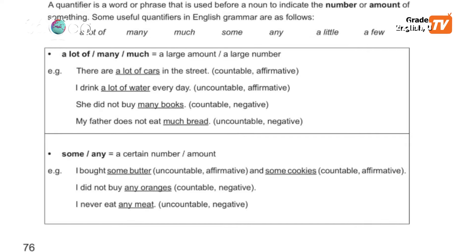A lot of means a large amount or large number, and it can be used with countable or uncountable nouns. For example: 'I drink a lot of water every day' — water is uncountable. 'There are a lot of people' — people is countable.